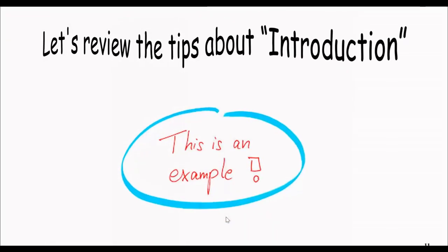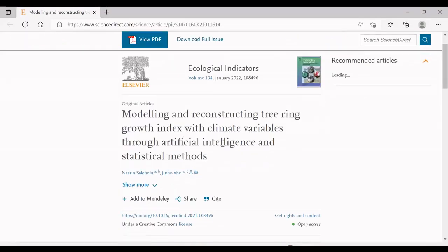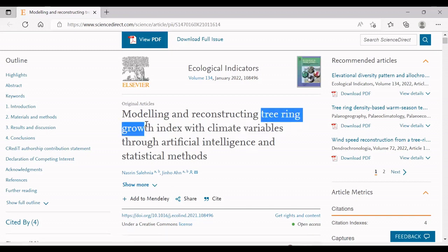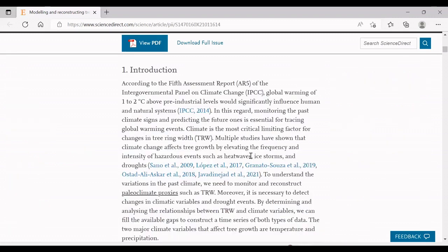Okay, let's review the tips about the introduction, such as different videos. It is the time. It's one of my papers about modeling and reconstructing tree rings. It's important to know that we have different terms in this topic. First, tree ring growth index, climate variables, artificial intelligence, and statistical methods. So by these four tips, I want to follow the introduction.